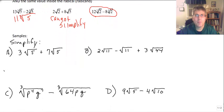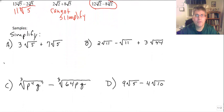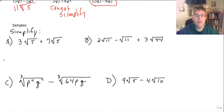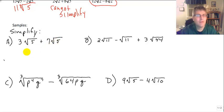Let's take a look at some sample problems and see if we can do some simplifying. We have 3 times the square root of 5 plus 7 times the square root of 5. We have the same index and the same radicand, so this simplifies to 10 square root of 5.